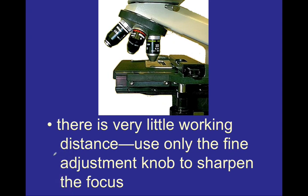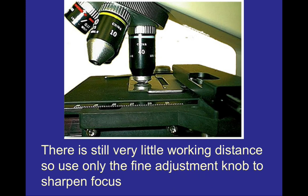Once you have gotten your microscope slide in focus with the scanning objective lens, you are ready to switch to the low power objective. The working distance is drastically decreasing as we change these objective lenses — there was much more working distance with the scanning objective than with the low power objective. This is why you should only use the fine adjustment knob at this stage, because using the coarse adjustment knob will drastically put your picture out of focus. As we progress to the high power objective, the working distance decreases even further — there is a very small distance between the high power objective lens and the microscope slide when in focus. This is what we mean when we say microscopes are parfocal: all objective lenses are roughly in focus, and as long as we only use the fine adjustment knob, we will stay within the right focal range.